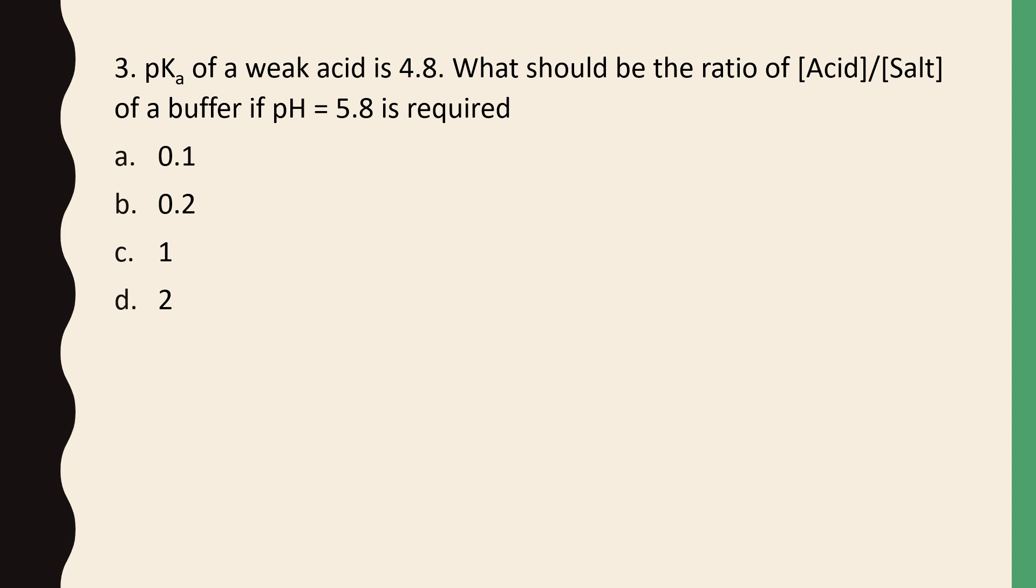pKa of a weak acid is 4.8. What should be the ratio of acid to salt of a buffer if pH of 5.8 is required? 0.1, 0.2, 1, or 2. The correct answer is option A, 0.1 and the solution is as follows.